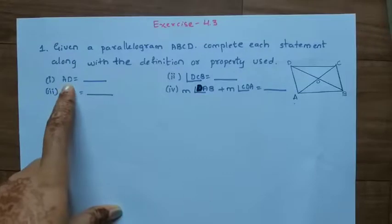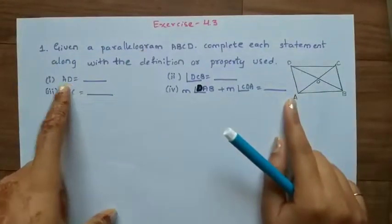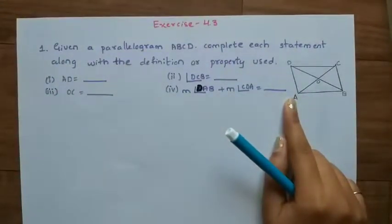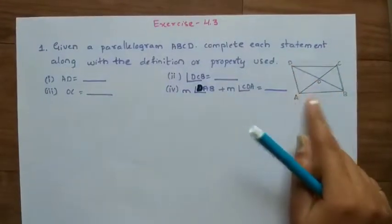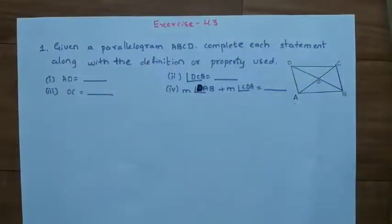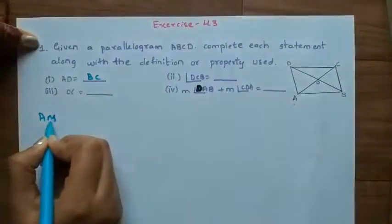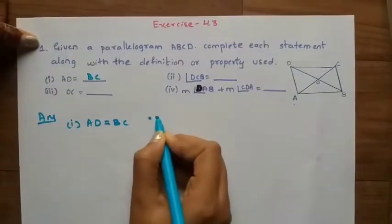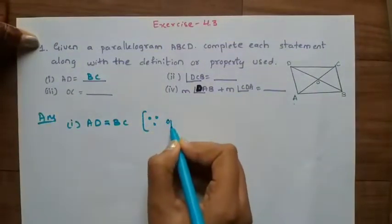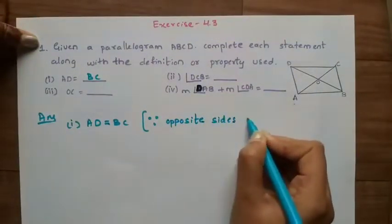See the first question: AD is equal to what? AD is a side of the parallelogram. We recall the property that opposite sides are equal. AD is opposite to BC, so AD is equal to BC. The first solution is AD is equal to BC because opposite sides are equal.